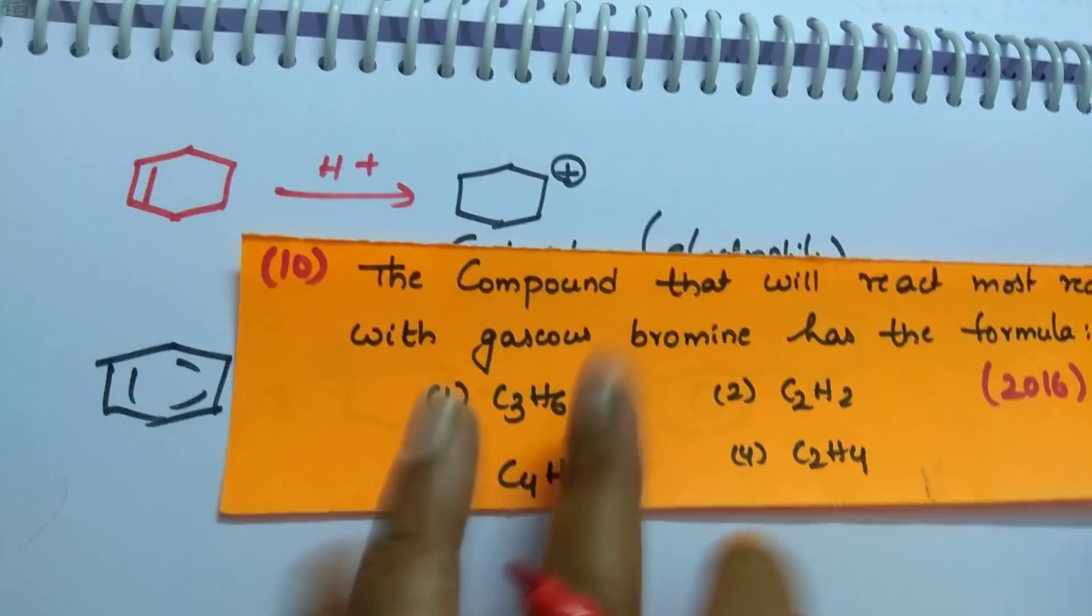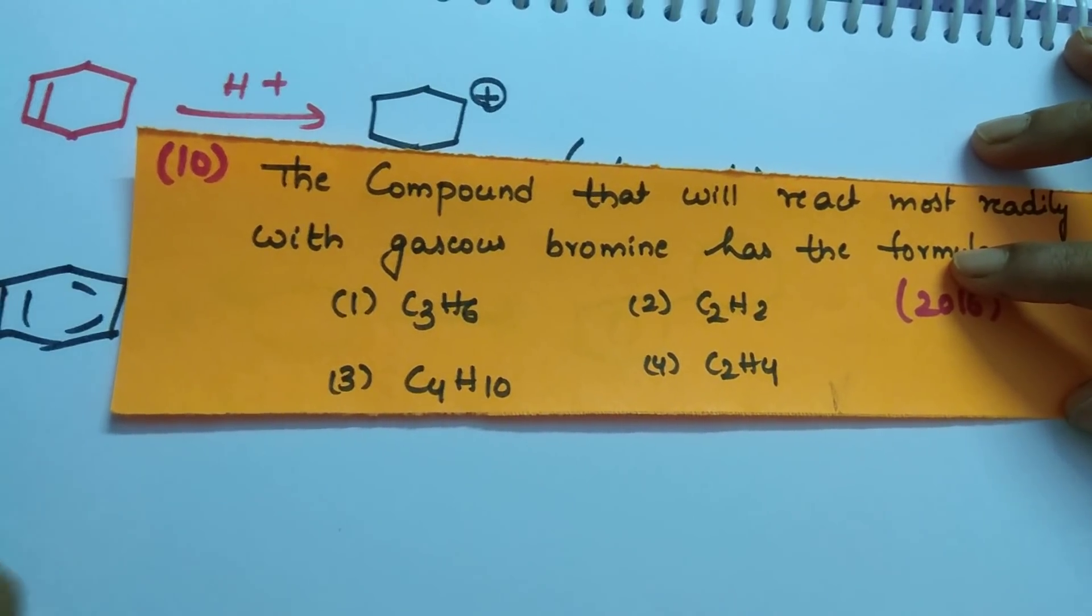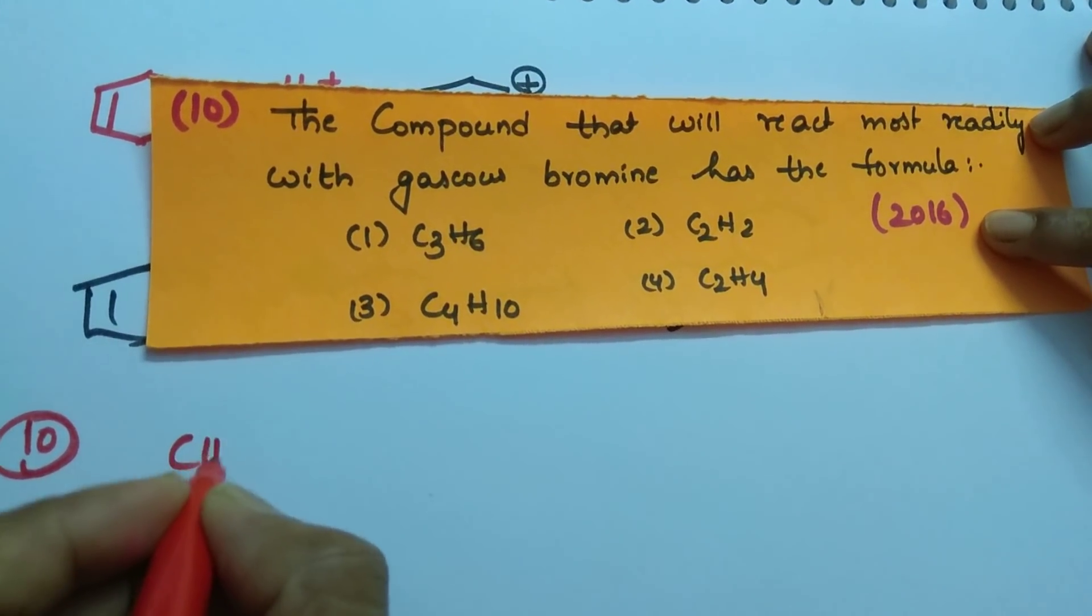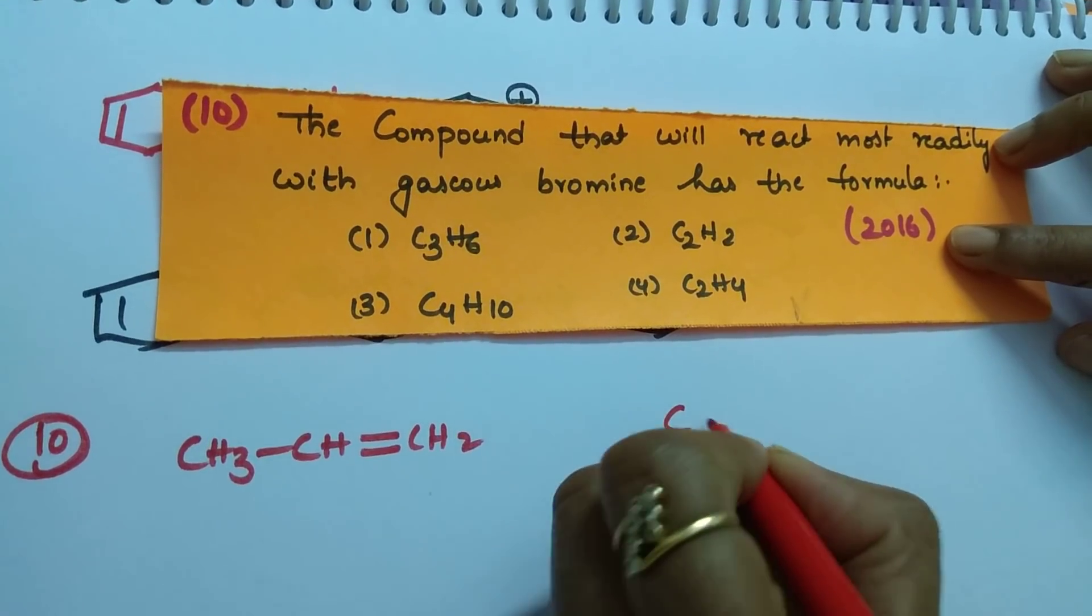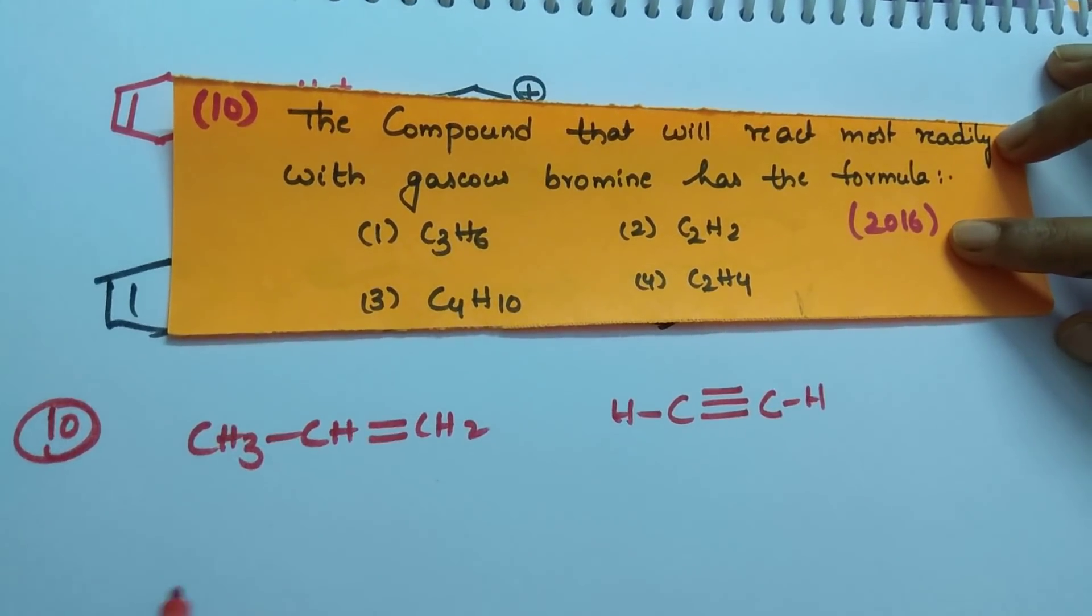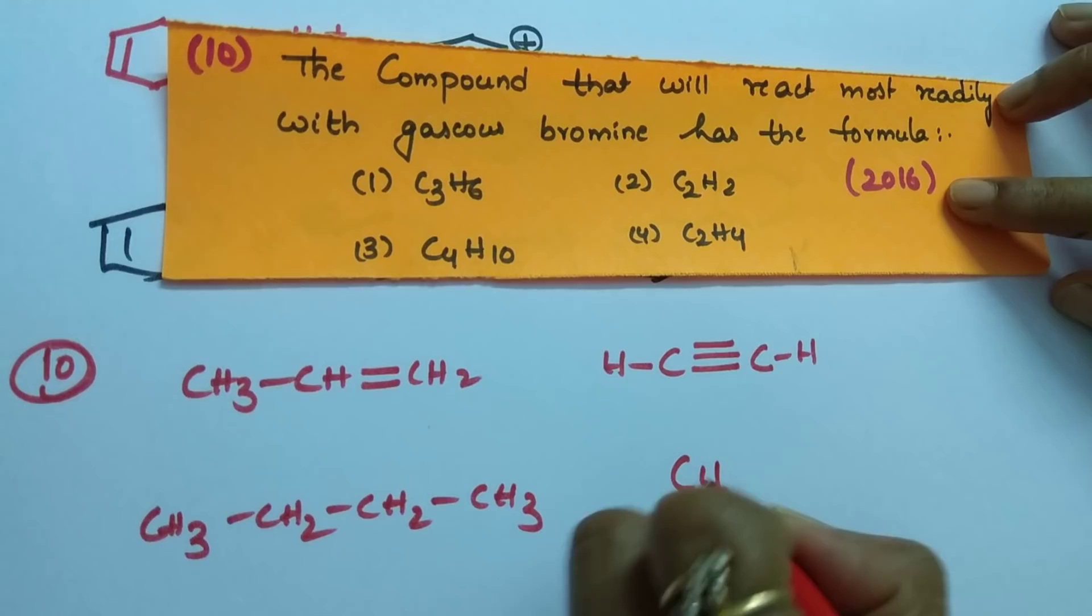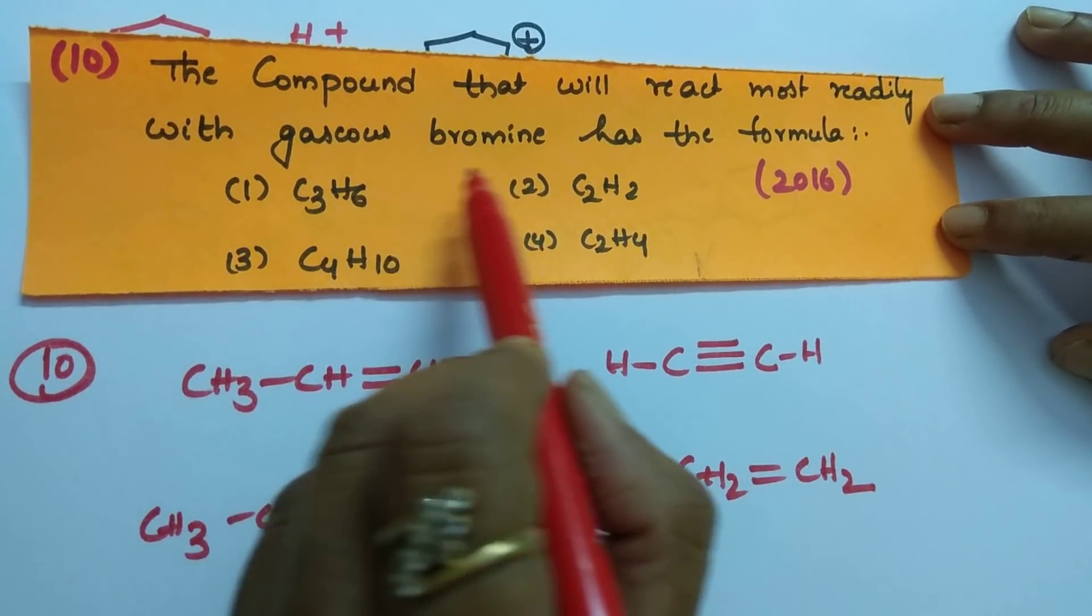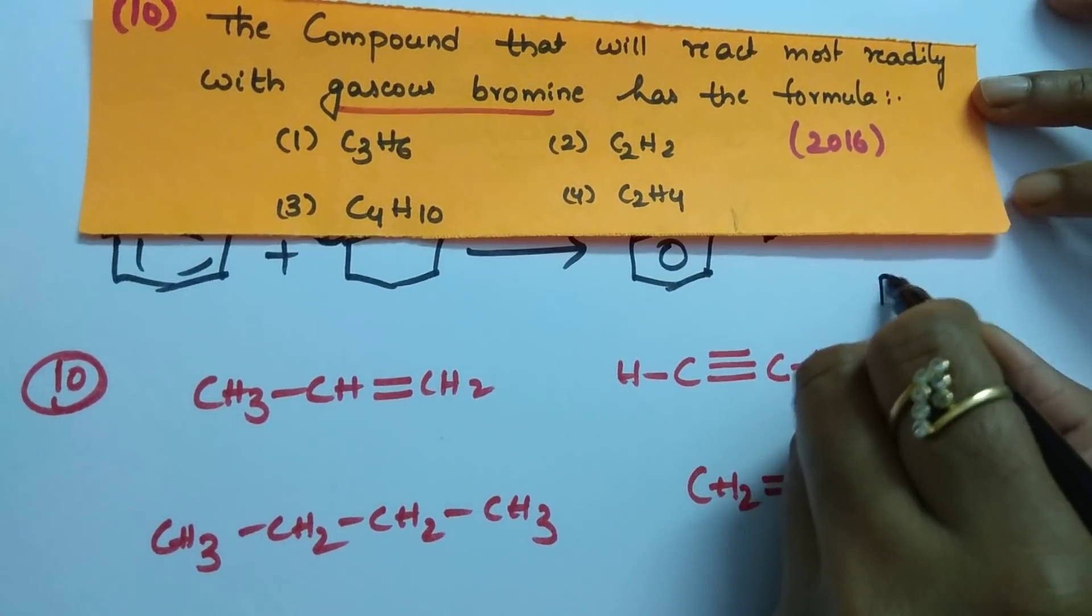And, coming to the next question. The compound that will react most readily with gaseous bromine has a formula. See here, first write the structures of all. One is propene, CH3, CH, double bond, propene. This is because C3H6, right? Next option is C double bond C acetylene. This one is acetylene. Next one is C4H10, right? So, butane. This is CH3, CH2, CH2, CH3. Next one is C2H4 is ethene or ethylene. In this, what they are asking is the compound that will react most readily with gaseous bromine.